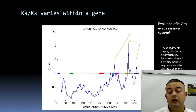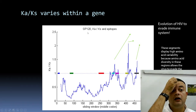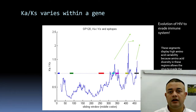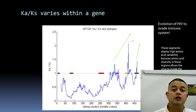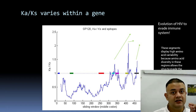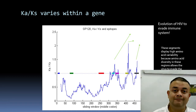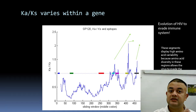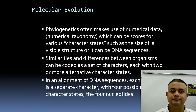This is gp120, the envelope protein 120 of HIV. HIV's epitopes are evolving at a faster rate to evade the immune system. Similarly, for SARS-CoV-2, certain regions of the genome — particularly spike protein regions in variants like delta — will show Ka/Ks greater than one. This demonstrates that even within a single gene, different parts can evolve at very different rates.